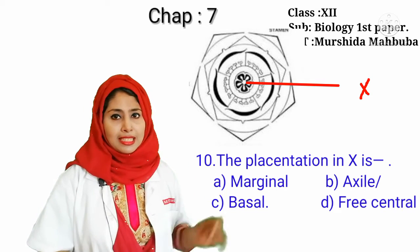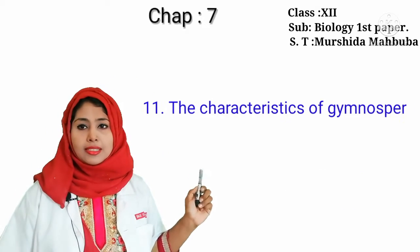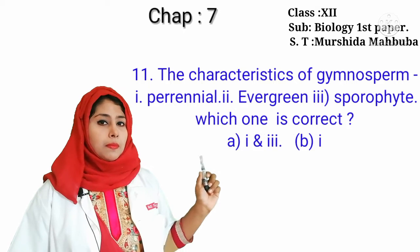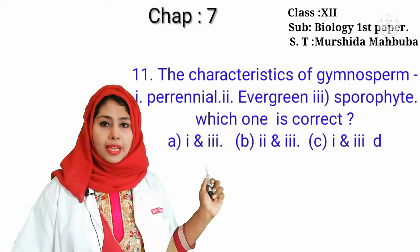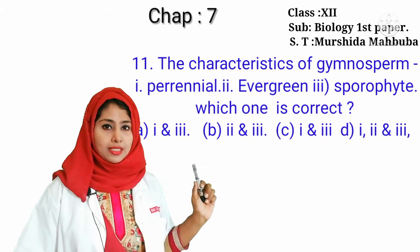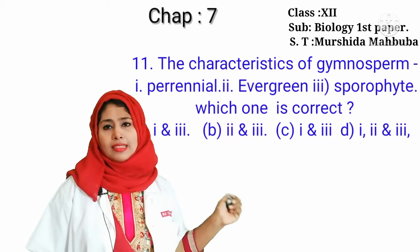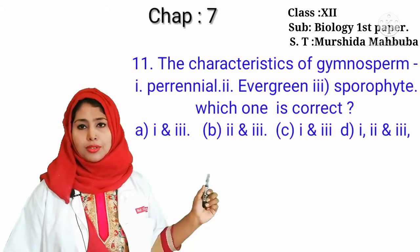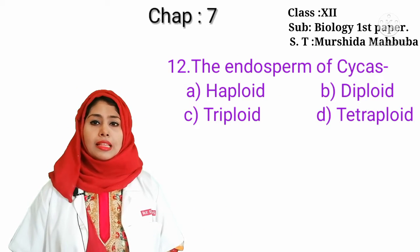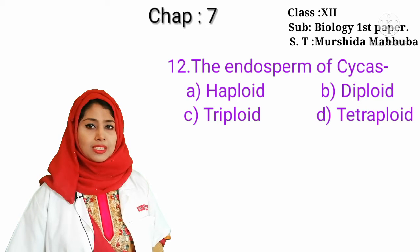Our next question is: the characteristics of gymnosperm — perennial, evergreen, sporophyte — which one is correct? All these answers are correct, so the correct answer is D. The endosperm of Cycas is haploid.